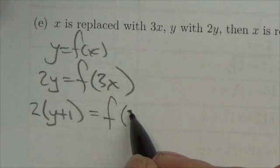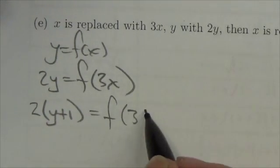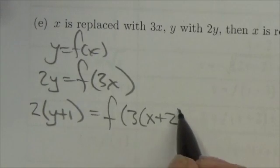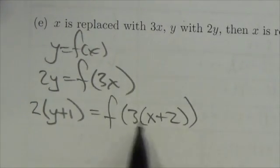x is being multiplied by 3. So when I replace x with x plus 2, I put this in parentheses. So the 3 is multiplied by the whole thing here.